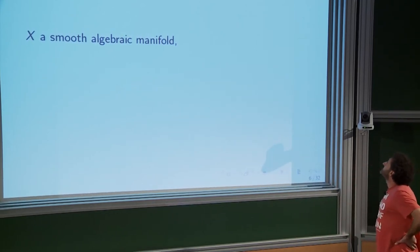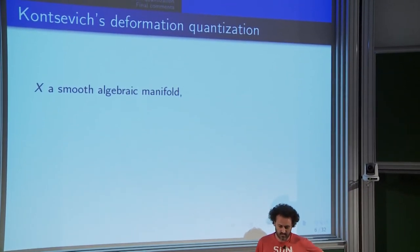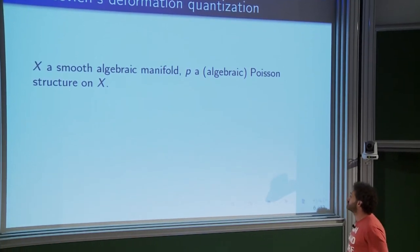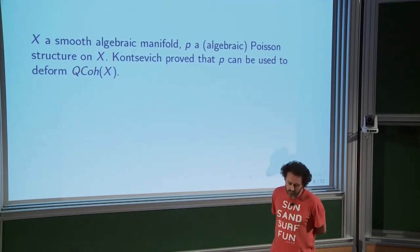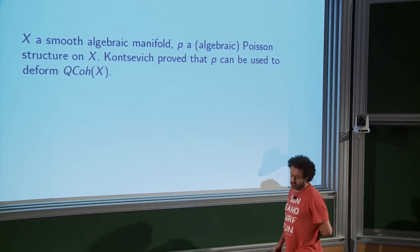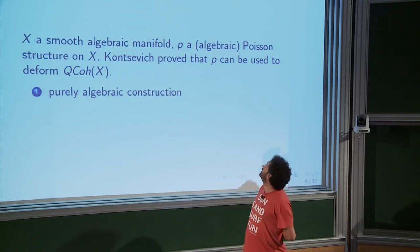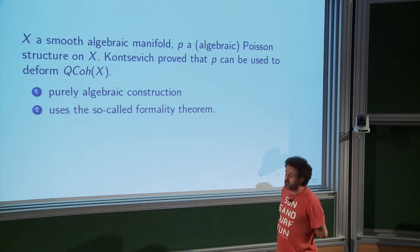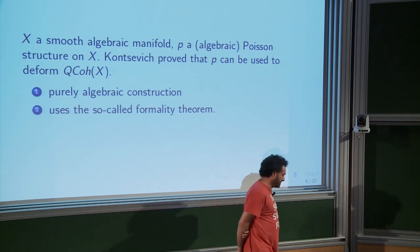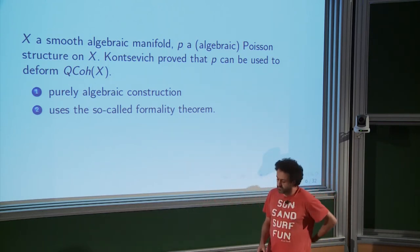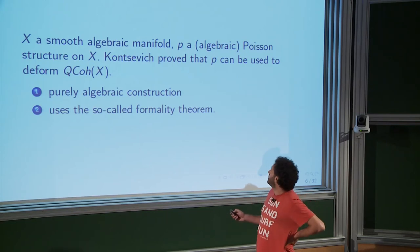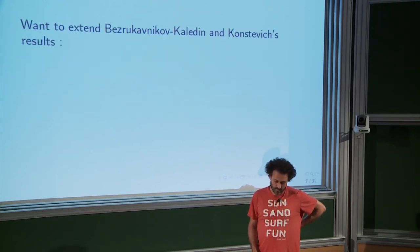There is another deformation quantization: Kontsevich's famous deformation quantization of Poisson manifolds. Starting with a smooth algebraic variety with an algebraic Poisson structure P, he proved that P can be used to canonically deform the category of quasi-coherent sheaves on X. This is a purely algebraic construction based on the formality theorem, which has a deep statement with subtleties I won't fully address here.